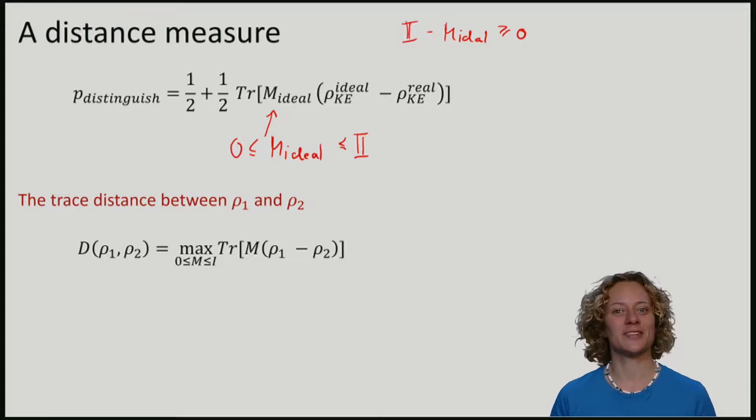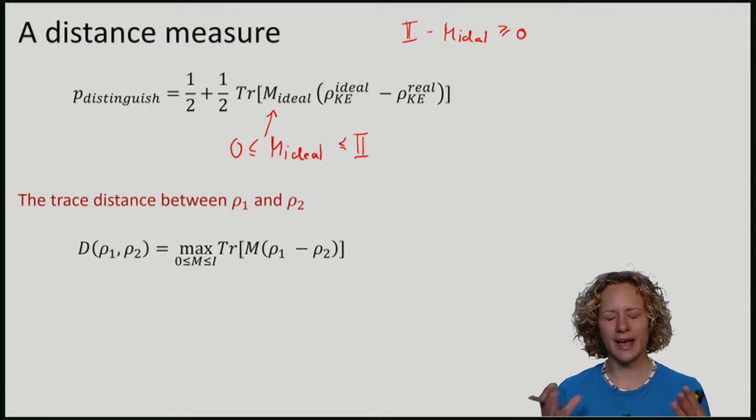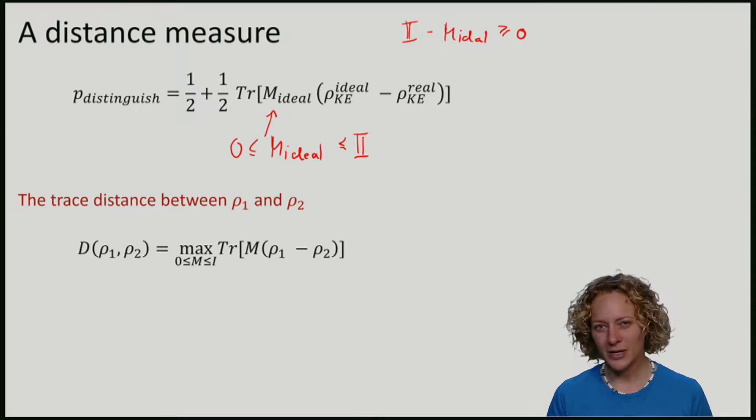You can see now that if the trace distance is small, then it means that it is difficult to distinguish these two states. And because we are maximizing, it means that it is difficult to distinguish ρ1 and ρ2 using any allowed measurement. In particular, any measurement allowed by nature that might be arbitrarily complicated. We might even need a quantum computer to realize these measurements.